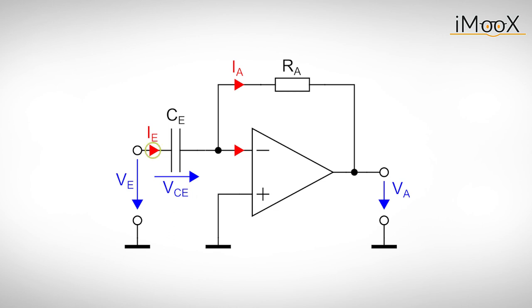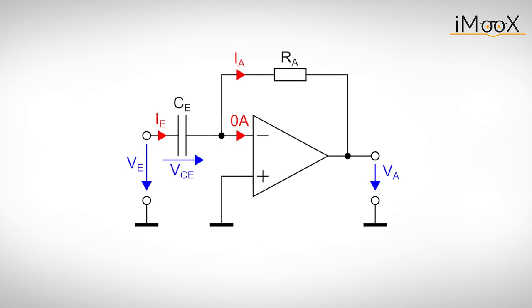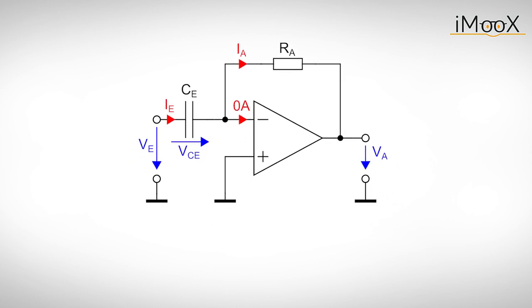Knowing that there is no current I minus flowing into the inverting input, the current IA equals IE. This is exactly the same method we apply now. But instead of the current voltage relation of the resistor RE, we use the one of the capacitor CE. And from here on it's just like for the inverting amplifier. We calculate the voltage drop over RA and the output voltage is minus this voltage drop.